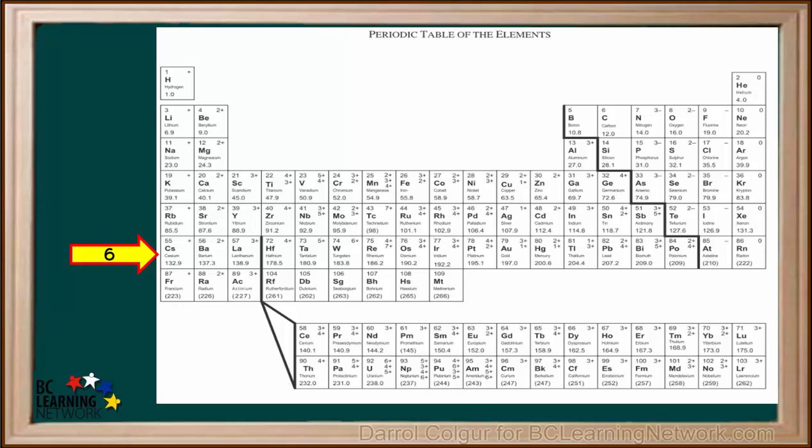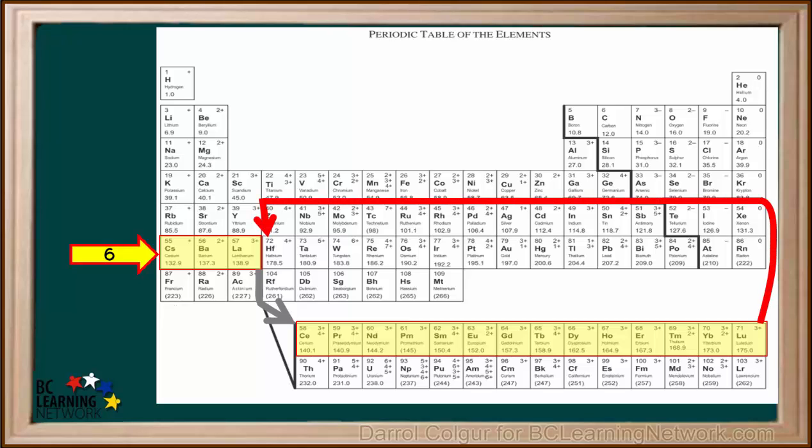Period 6 is a little different. It starts with elements 55 to 57, cesium to lanthanum, and then it proceeds down here to element number 58, cerium to lutetium, then it proceeds back up here to element 72, hafnium, and continues with elements 72 to 86, hafnium to radon.